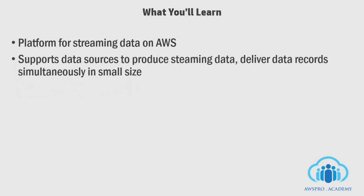In most cases, streaming data is continuously produced by thousands of data sources. They are delivered at the same time in small sizes, mostly in kilobytes. Examples of streaming data include log files generated by servers or applications, game data generated by players in a gaming software, content generated from social media networks like Facebook or LinkedIn, and even data generated from financial trading floors or IoT devices.